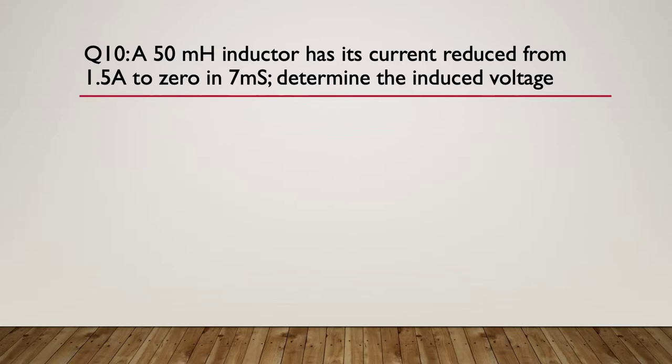Question 10: A 50 millihenry inductor has its current reduced from 1.5 amps to 0 in 7 milliseconds. Again, determine the induced voltage. So pause here.